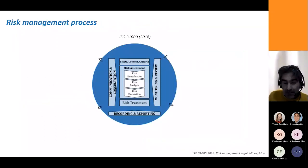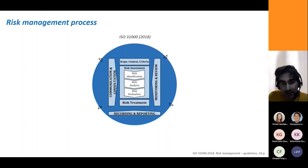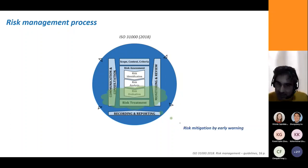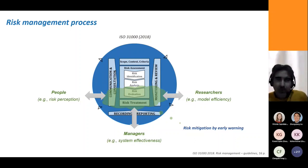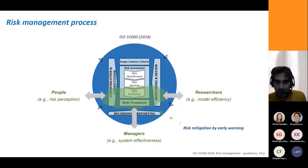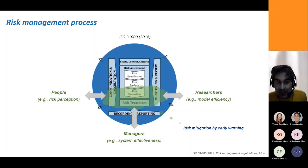If we consider the risk management process, risk mitigation by early warning is a risk treatment option that we have in our hands after the risk has been evaluated. I like this schematic because it highlights the role that communication, consultation, monitoring, and review have in this process. It also allows me to highlight that the main actors are not only the managers of the systems, but also researchers and people whose risk perception is key to a system that is effective in reducing disaster risks.